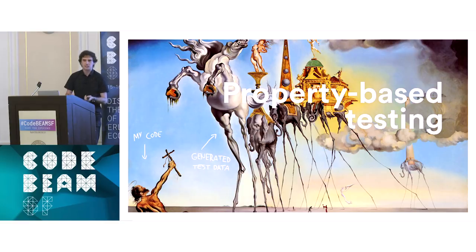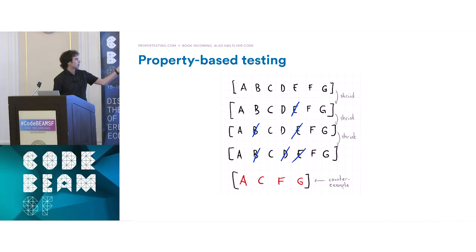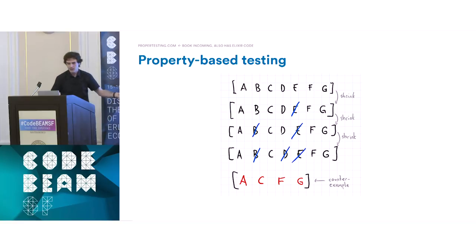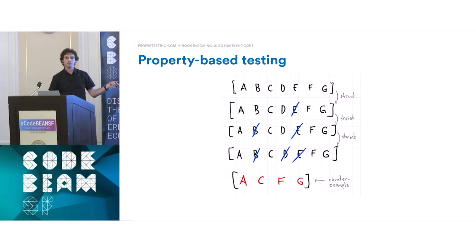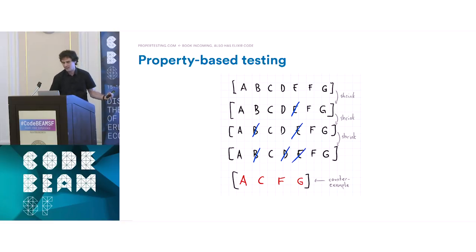You tell the system to run against the real thing, throw all these operations at it, and it might generate a super long sequence — 150 operations long — and at some point find an error. That's where shrinking comes in: the system tries to remove operations until it finds something simpler. At the end, you could have very simple operations like log in, upload an image, delete the image, and upload the image again — and that broke the rule about duplicate image checking not being unset when the picture was deleted.